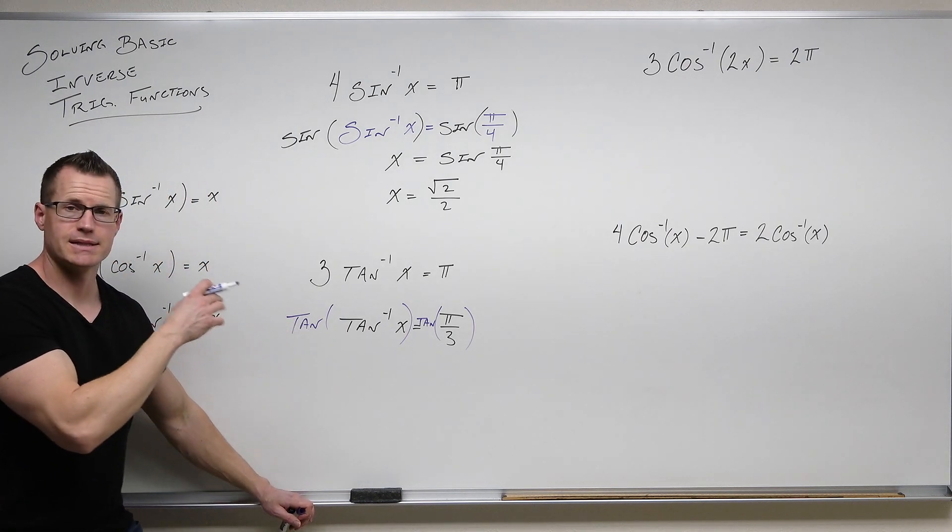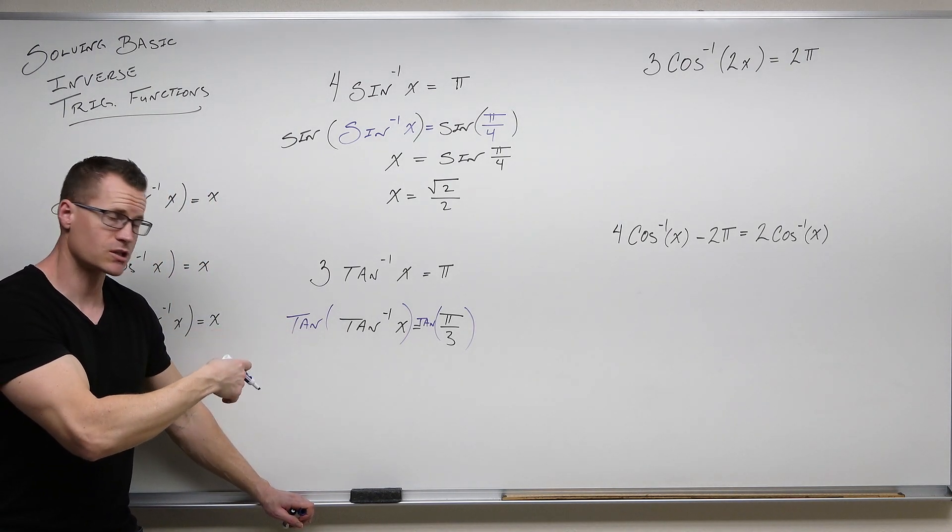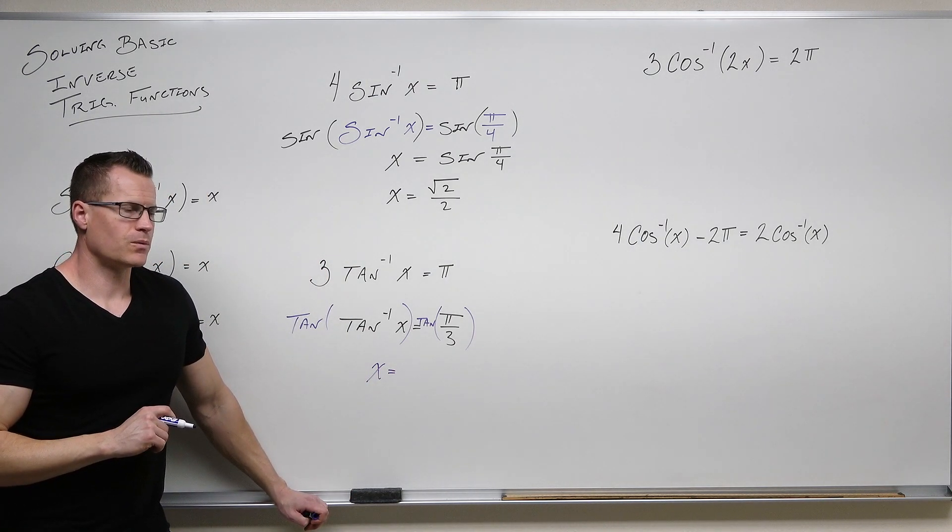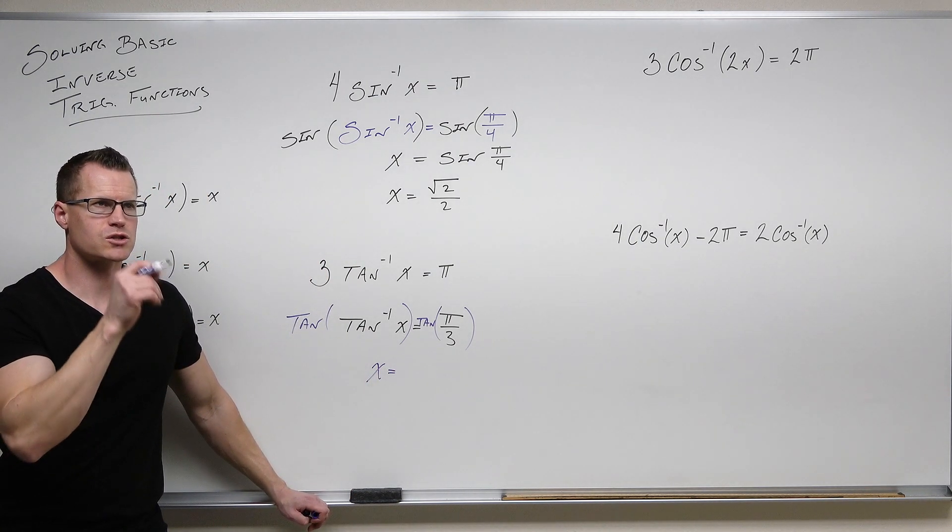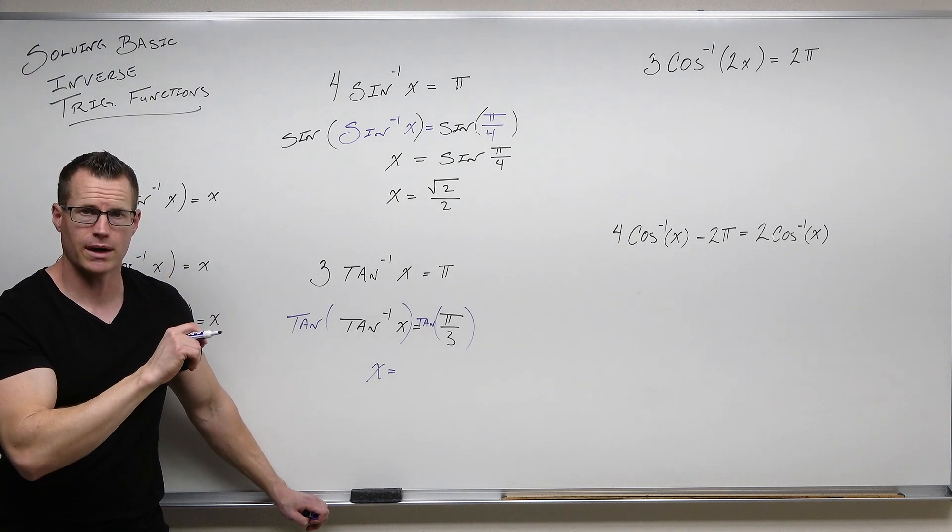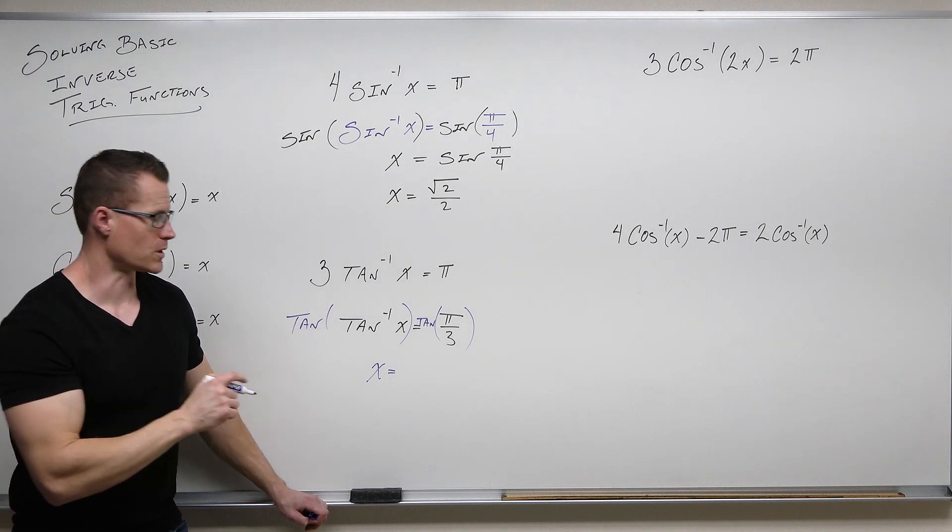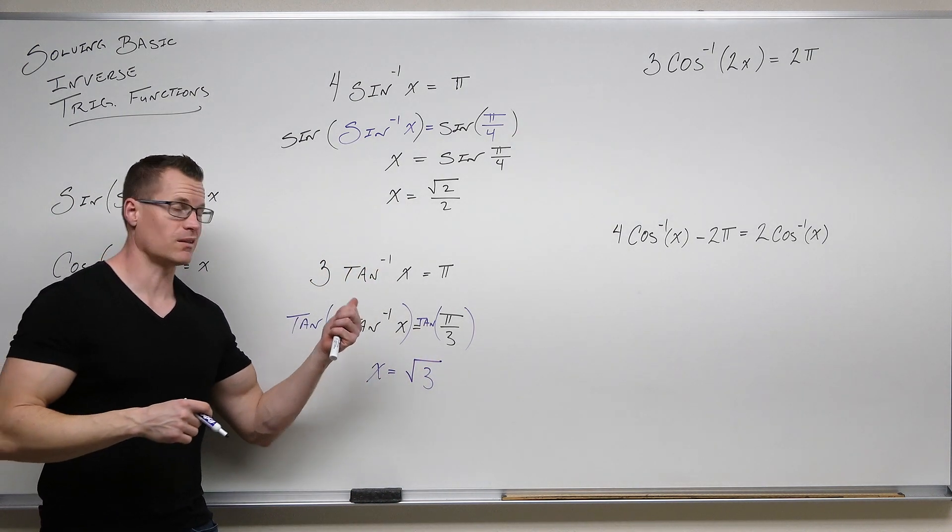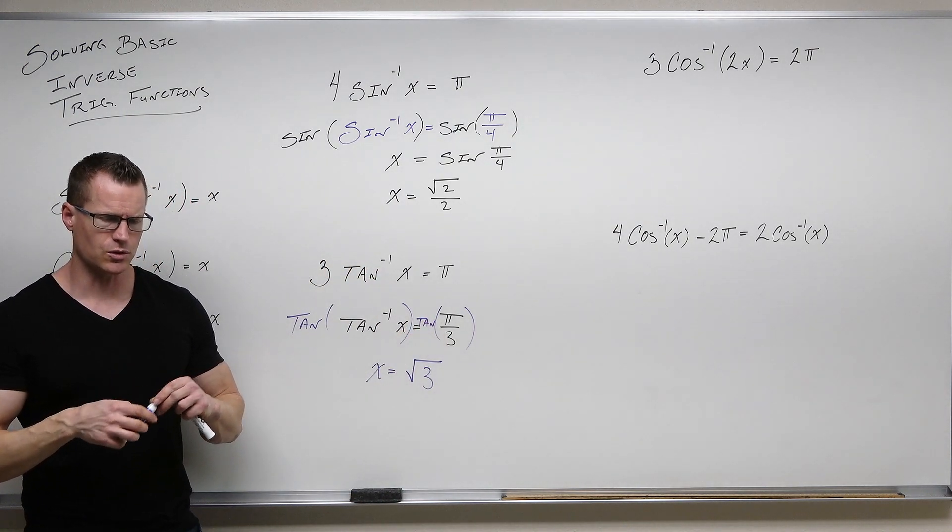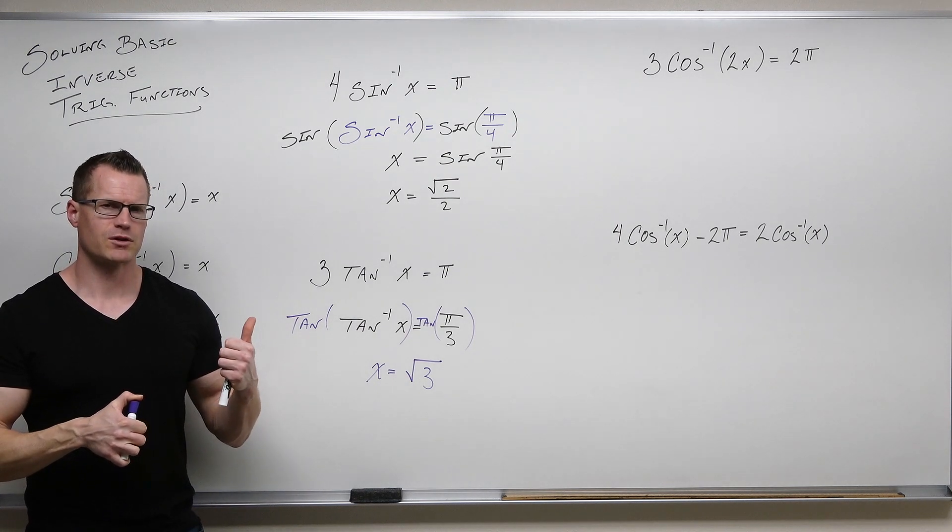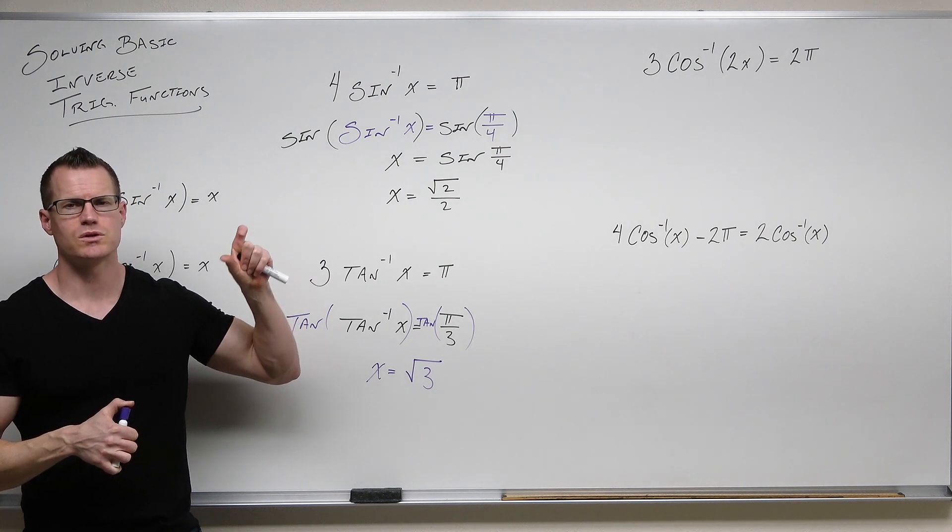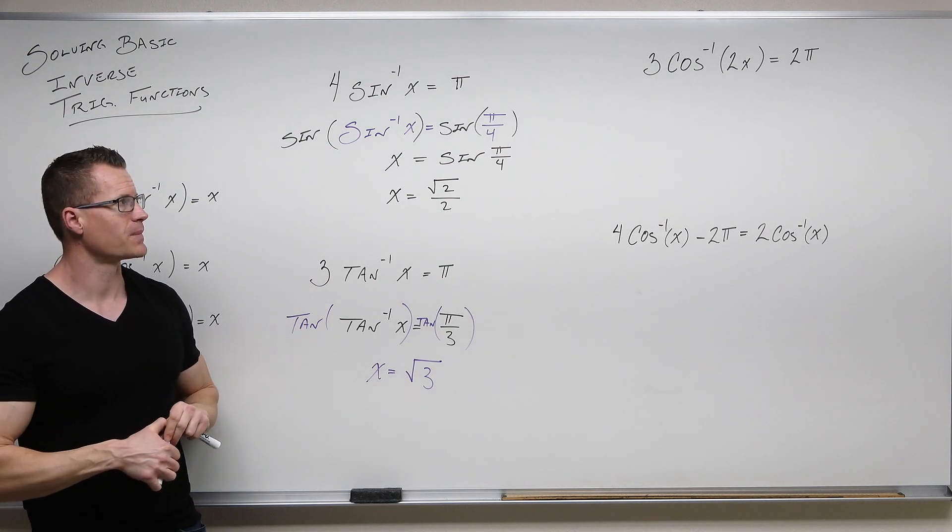On the left-hand side, tangent of tan⁻¹(x) is just going to give us x. On the right-hand side, tangent of π/3. Well, tangent of π/3 is going to take √3/2 divided by 1/2. That's simply the √3. I know I'm going fast through that because we spent a lot of time doing things like that and using the unit circle. So we should know that tan(π/3) takes the y-coordinate over the x-coordinate. √3/2 divided by 1/2 is √3.